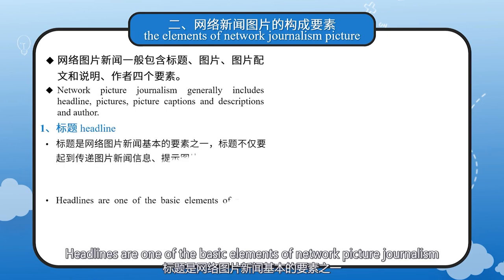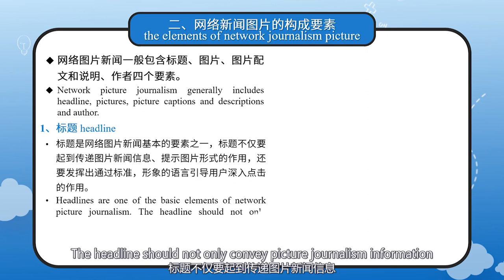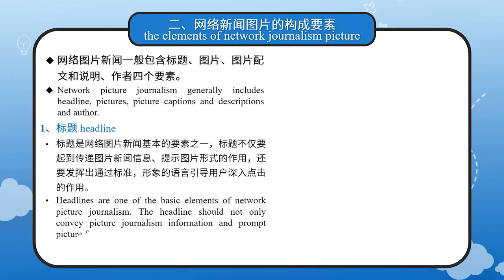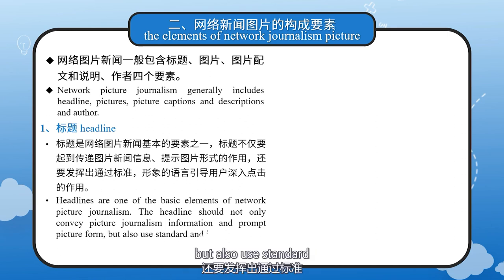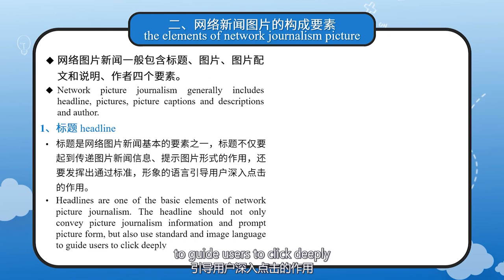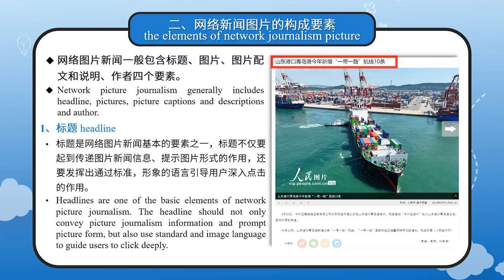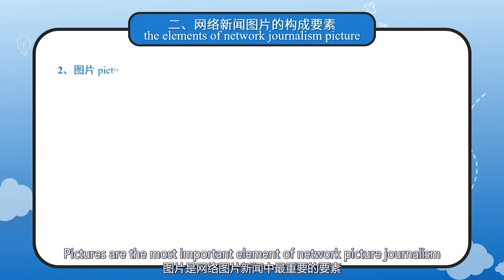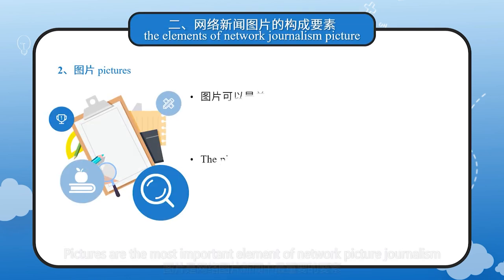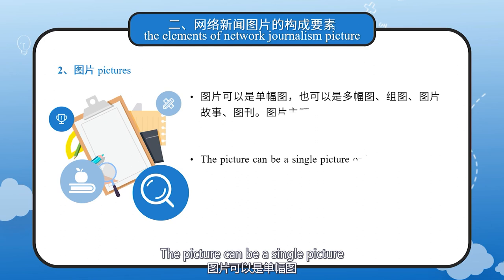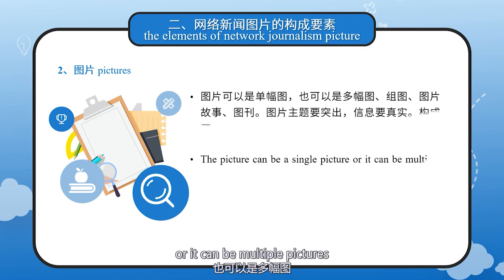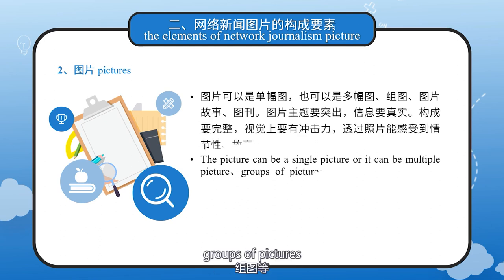Headlines are one of the basic elements of network picture journalism. The headline should not only convey picture journalism information and prompt the picture form, but also use standard and vivid language to guide users to click deeper. Pictures are the most important element of network picture journalism. The picture can be a single picture, or it can be multiple pictures — groups of pictures.